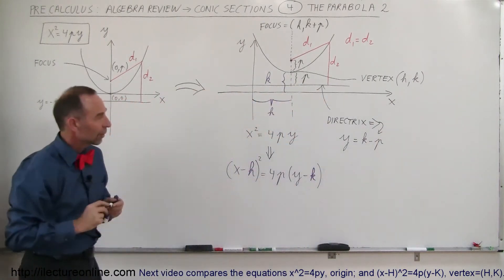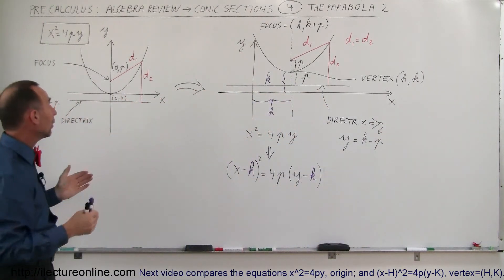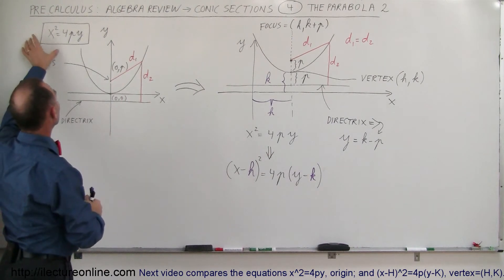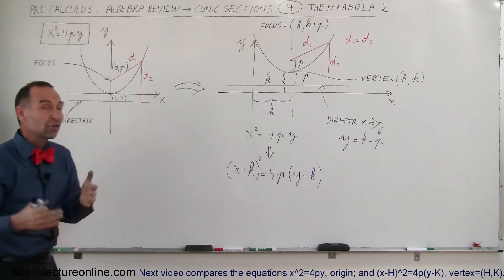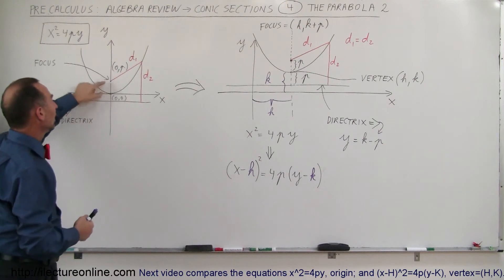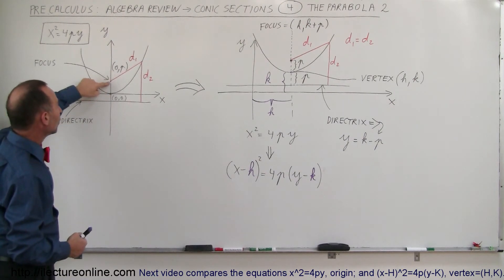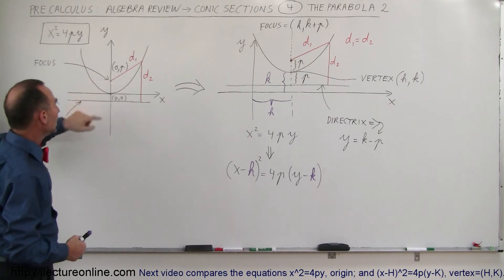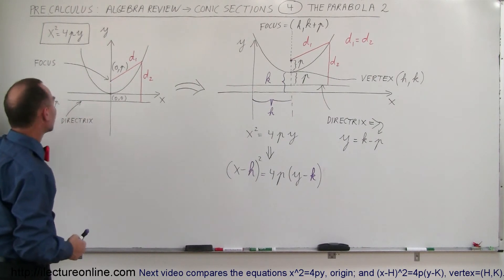So there we go. We'll change the arrow direction there. So in general now, if we have the equation x² = 4py, that is the equation for a parabola with the vertex at the origin. And that means that the focus is at the point (0,p) and the directrix is at y = -p.